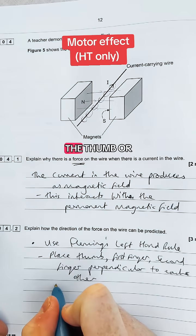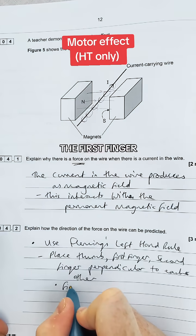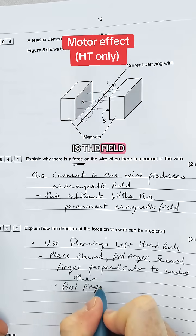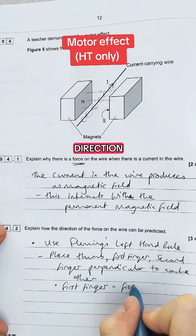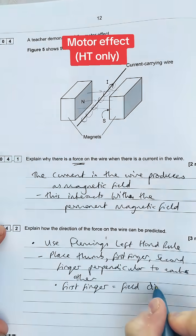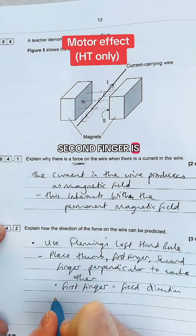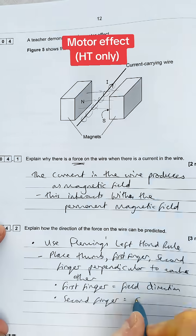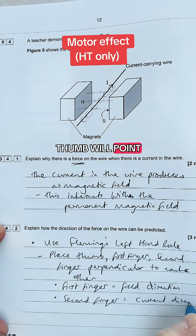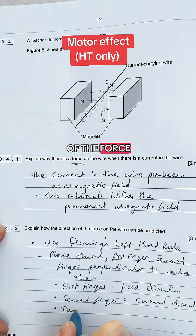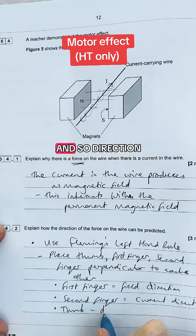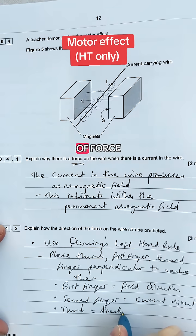So you'd say the first finger is the field direction. Second finger is the current direction and therefore your thumb will point in the direction of the force on the wire. And so direction of force.